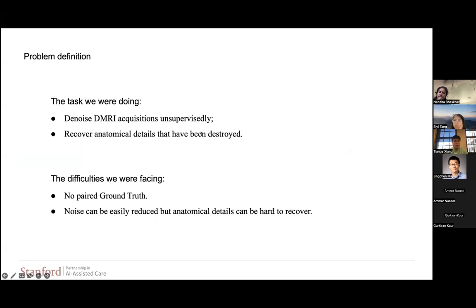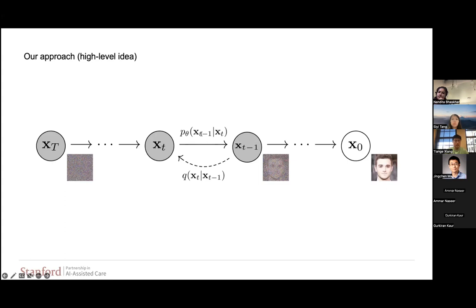Now we can formally define our problem. The task we are doing in this work is that we want to denoise MRI acquisitions unsupervisedly, and we want to recover anatomical details that have been destroyed during the acquisition, during the efficient acquisition. The difficulties we are facing right now is that there's no paired ground truth can be used. Noise can be actually very easily reduced, but the anatomical patterns, the underlying details can be very hard to recover.